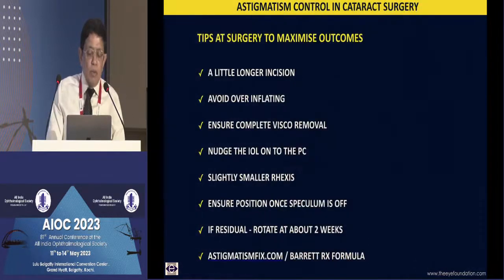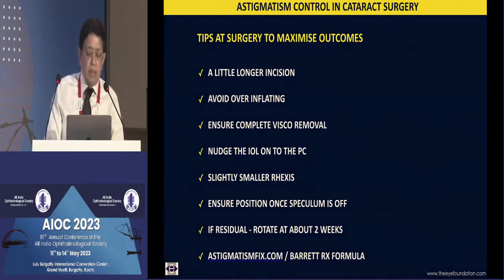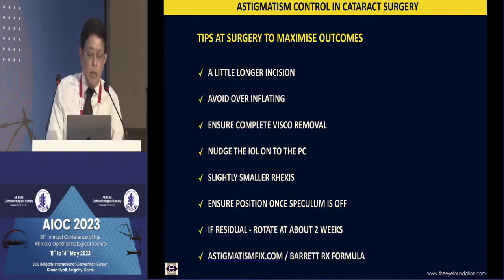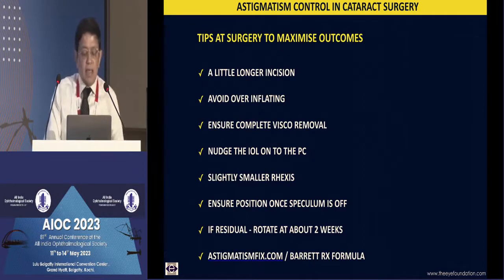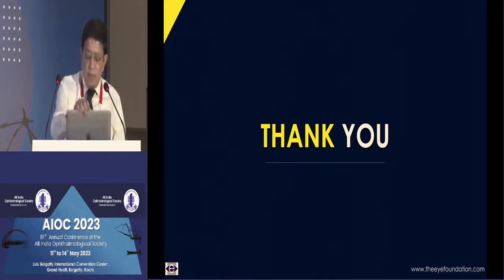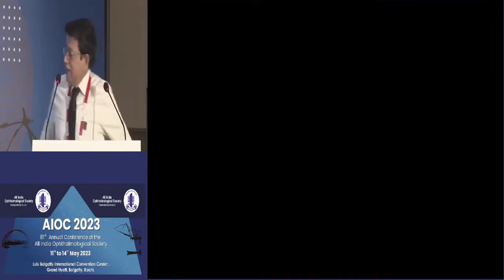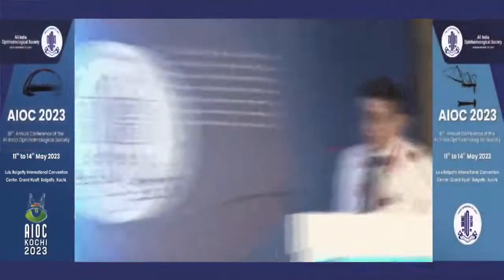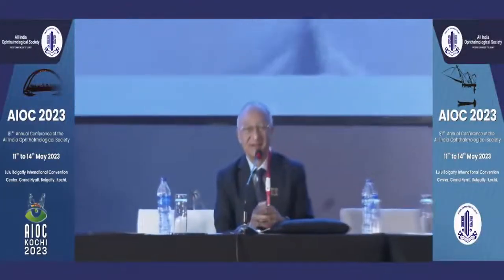Regarding surgical steps: make a slightly longer incision for a very stable chamber. Avoid over-inflating lenses because fluid behind the IOL increases the tendency to rotate. Use hydro-implantation or complete viscoelastic removal, and nudge the IOL onto the posterior capsule at the end of surgery. Ensure the final position is verified once the speculum is off. If there is residual toricity, there are formulas available to calculate what rotation is needed.